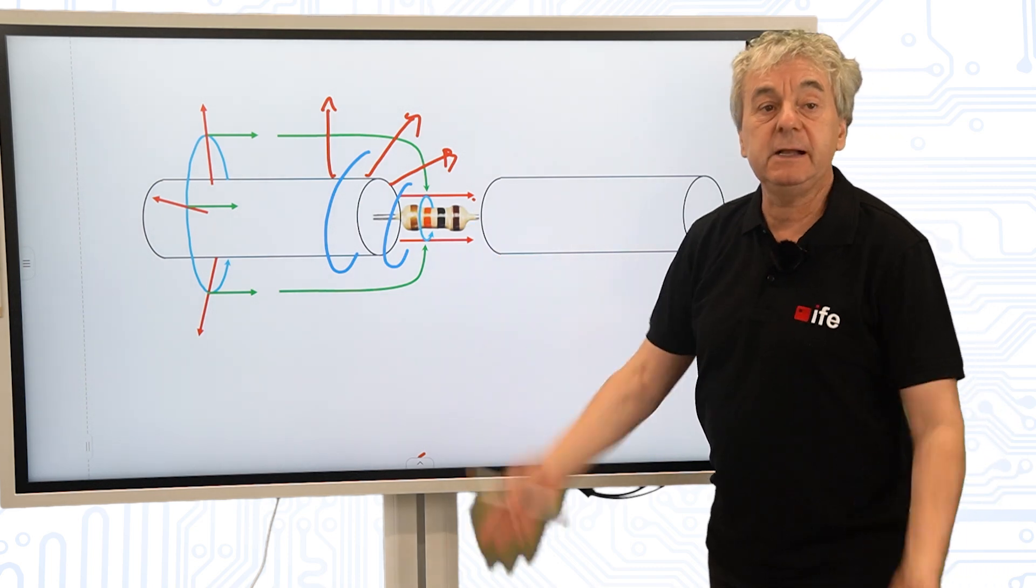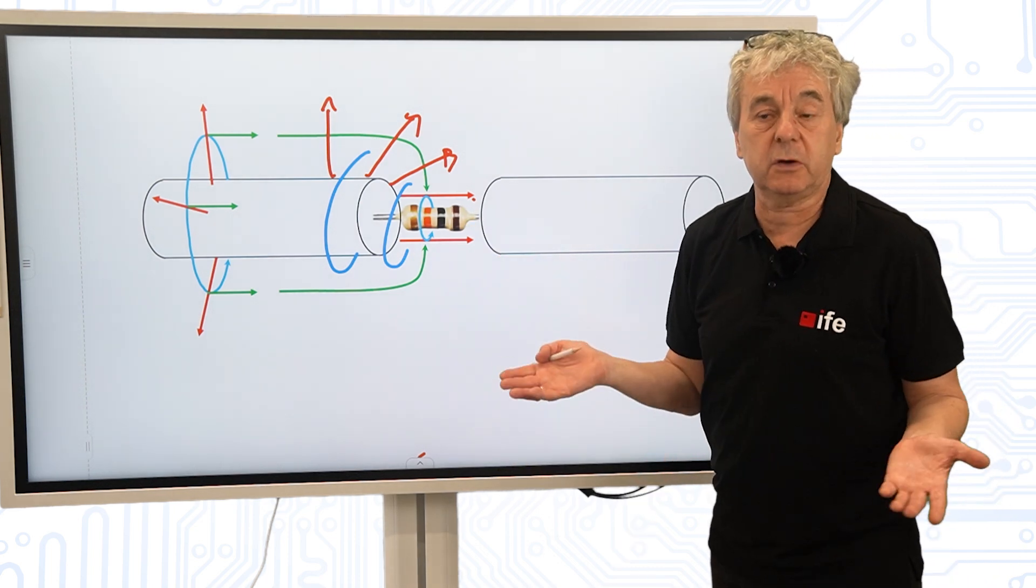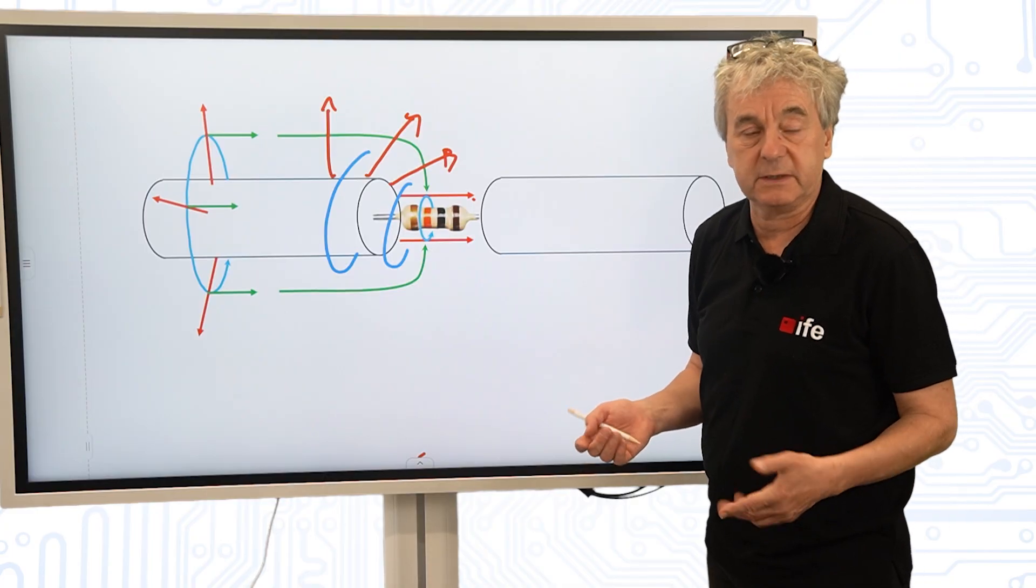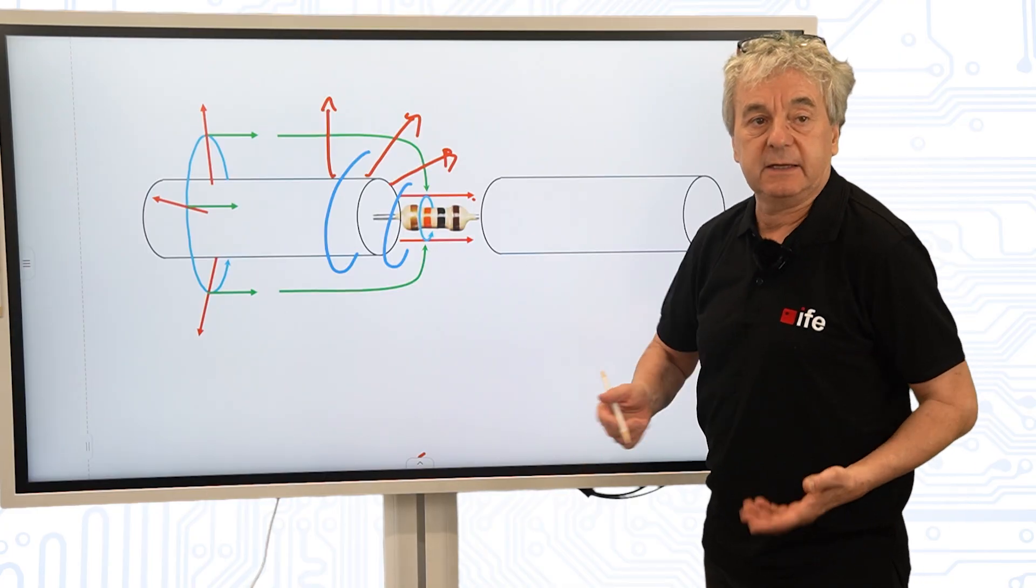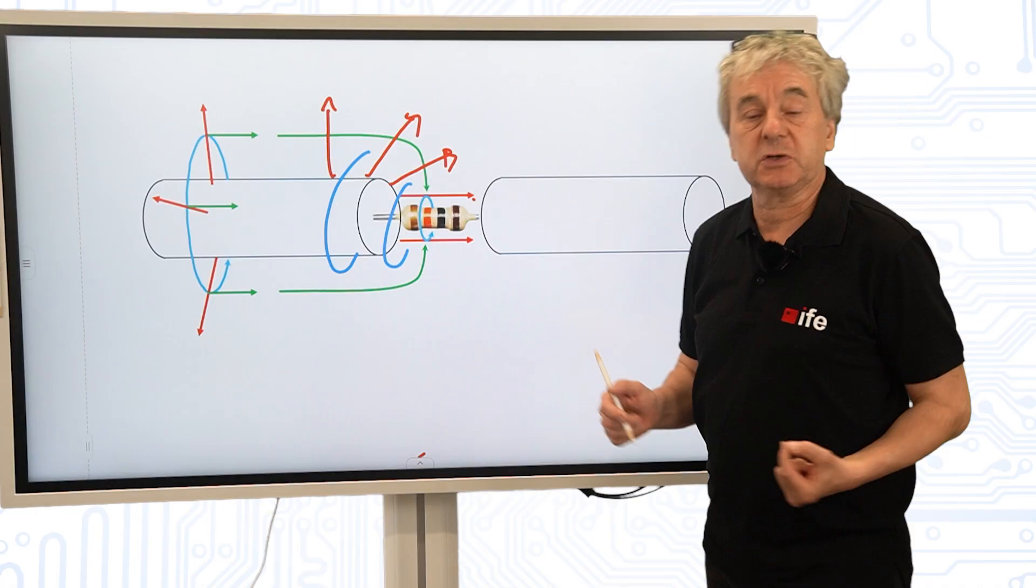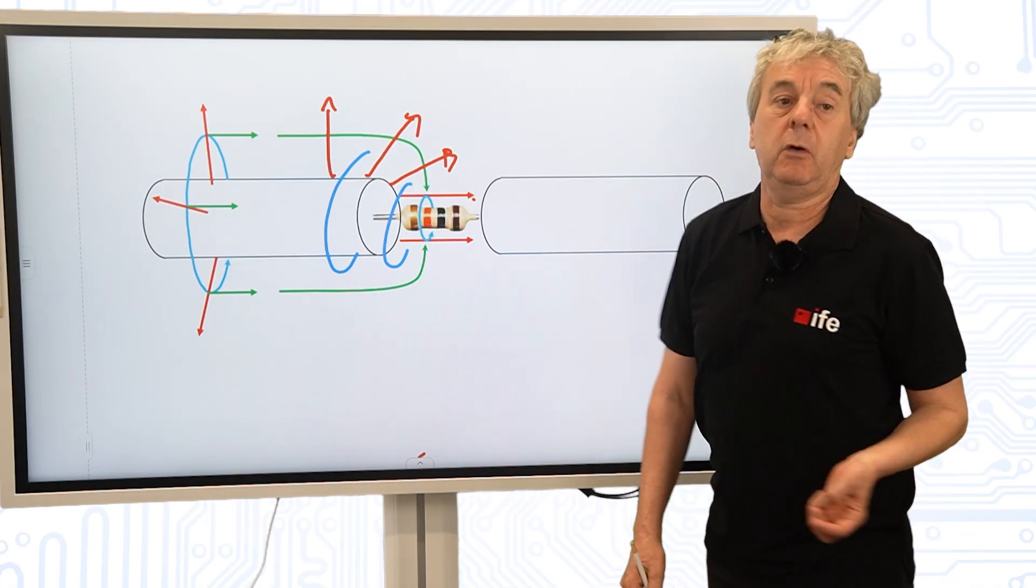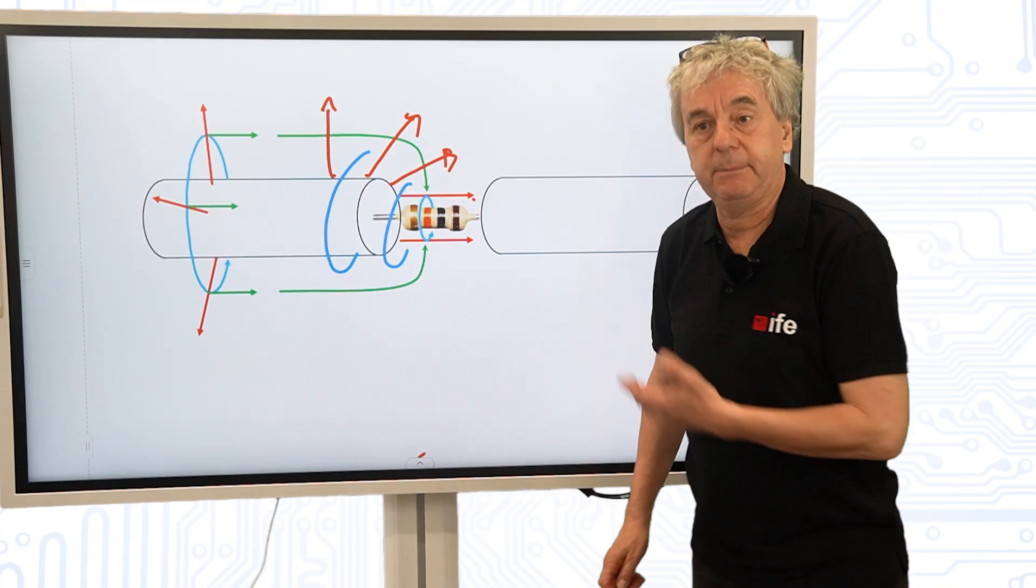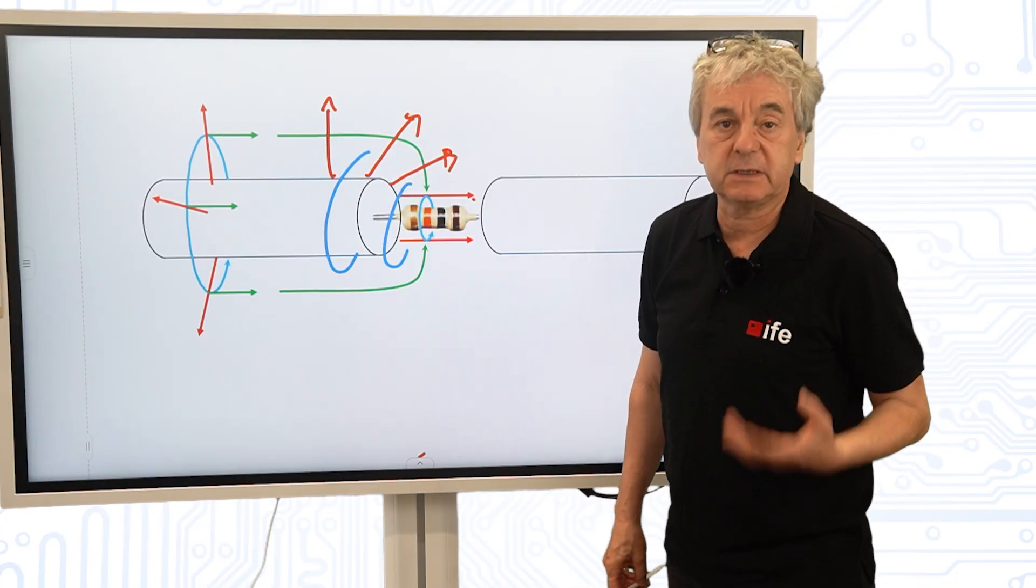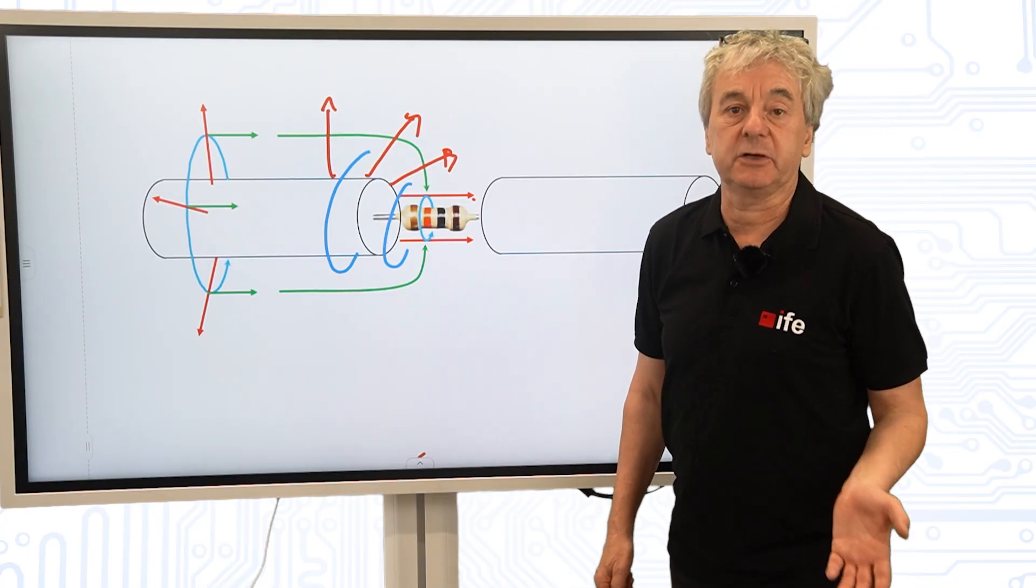And here this is the field illustration. Normally in a circuit we wouldn't think about electromagnetic fields. We would always think of Ohm's law, etc. But there are situations where that description via Kirchhoff's law is insufficient. Then we have to go back to fields. And this example is to show that the energy is not transported in the wires. The wires guide the energy.